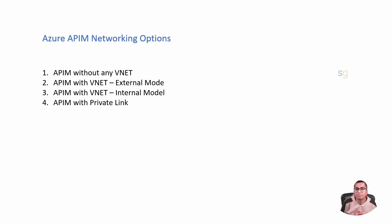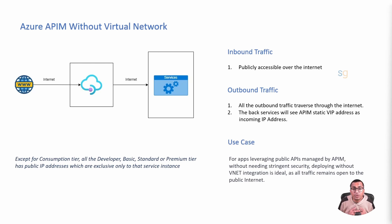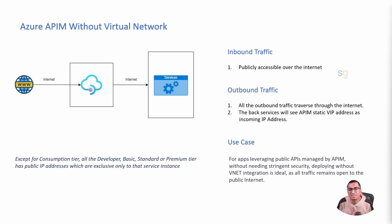The first option is API Management without any virtual network. When you deploy API Management without any virtual network configuration, both your inbound and outbound traffic are exposed to the public internet. For inbound traffic — all the API calls coming from your consumers or clients to your API Management service — these calls are made directly over the internet. This is often the quickest setup and is suited for APIs that do not require a high level of security, for example public-facing APIs offering information that is not sensitive.